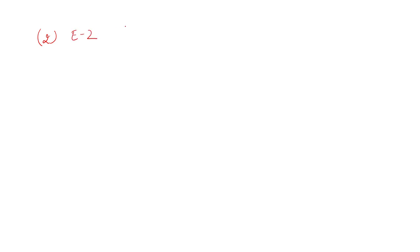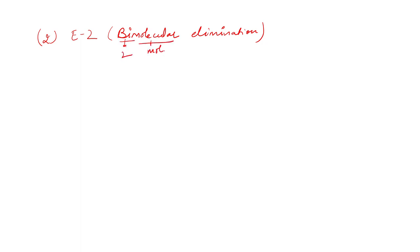The second type of reaction is E2 — just like there was SN1 and SN2. This is bimolecular elimination, so as you can tell from the name, two molecules will be involved in this reaction. It involves a single step — the entire reaction occurs in one step.